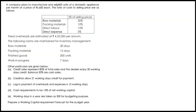A company plans to manufacture and sell 400 units of a domestic appliance per month at a price of Rs. 600. The ratio of cost to selling price are as follows: raw material is 30% of selling price, packing material 10% of selling price, direct labor 15%, and direct expenses 5%.